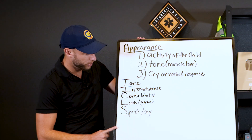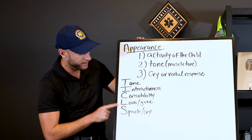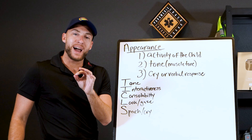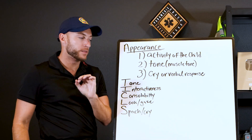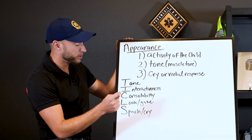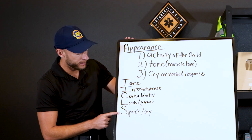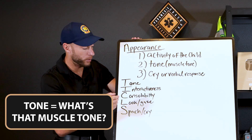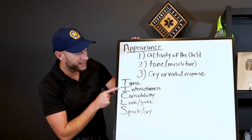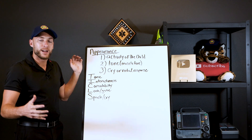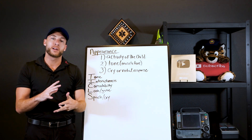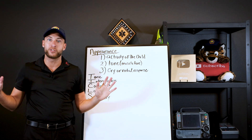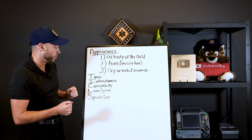The TICLS mnemonic — T-I-C-L-S — is how we evaluate appearance. T is tone: what's the muscle tone? I is interactiveness. C is consolability — with the patient's normal caregivers, is the patient consolable or are they inconsolable? That's what we're looking for in consolability.